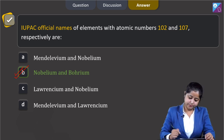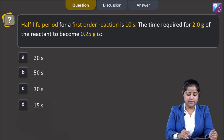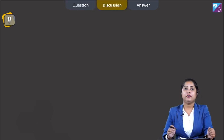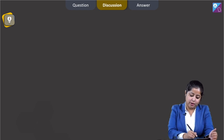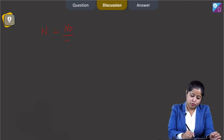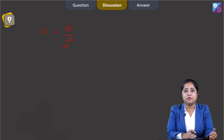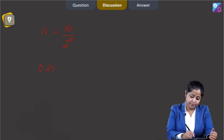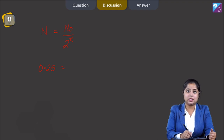Half-life period for a first-order reaction is 10 seconds. The time required for 2 grams of the reactant to become 0.25 grams is? For a first-order reaction, the amount left after N half-lives equals N₀ divided by 2 raised to the power N, where N₀ is the initial amount and N is the number of half-lives. Here, N is 0.25 g and N₀ is 2 g.